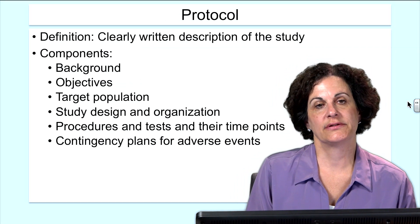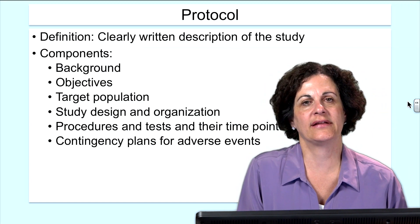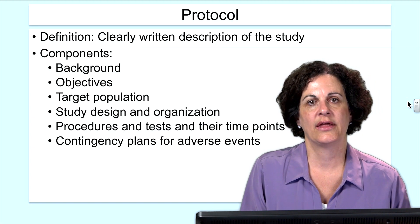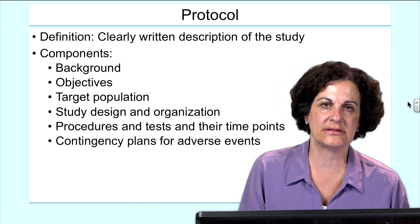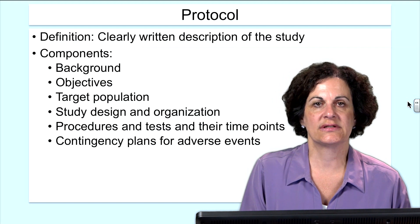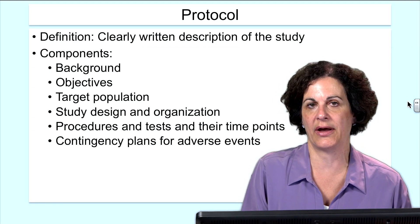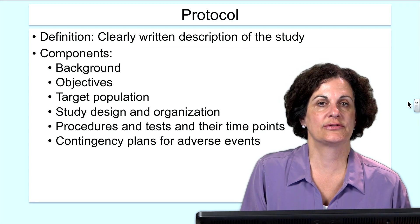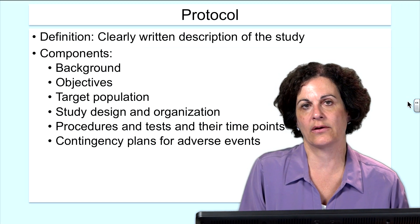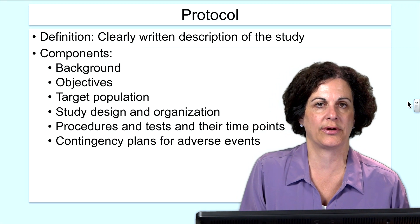With regard to the protocol, its definition is a clearly written description of the study — think of it as a recipe. It must include the background of the agent being studied, the objectives of the clinical trial, the target population including inclusion and exclusion criteria, the study design and organization, the procedures and tests with their time points, and any contingency plans for adverse events. Adverse events on clinical trials are really important: we need to record them, evaluate them in context, determine whether they are related to the study agent, and report them to regulatory authorities as needed.